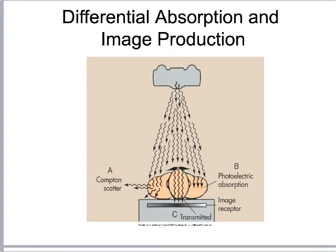Photoelectric effect contributes to what we call differential absorption — different tissues attenuate x-rays differently inside the body. Inside the patient, both Compton scatter and photoelectric absorption occur. Whatever makes it through to the image receptor forms ratios, and within those ratios we produce a picture. The x-ray tube fires toward the patient; some x-rays scatter, some are absorbed photoelectrically, and some pass through — each contributing differently to image formation.